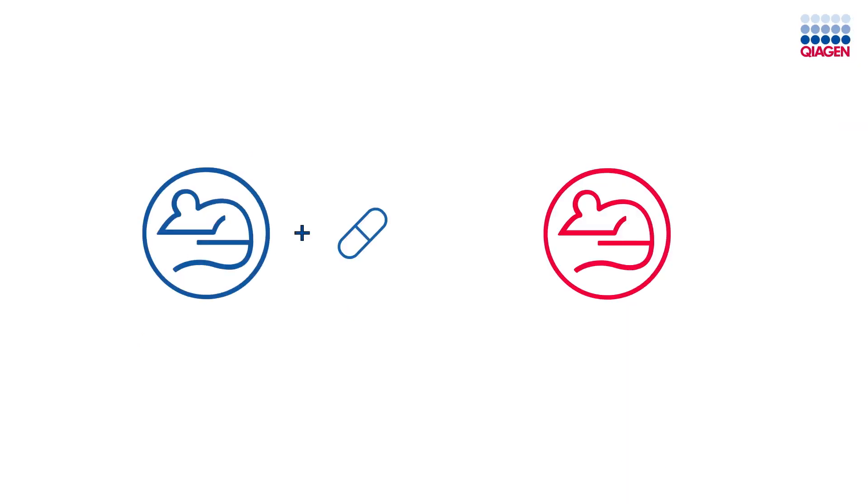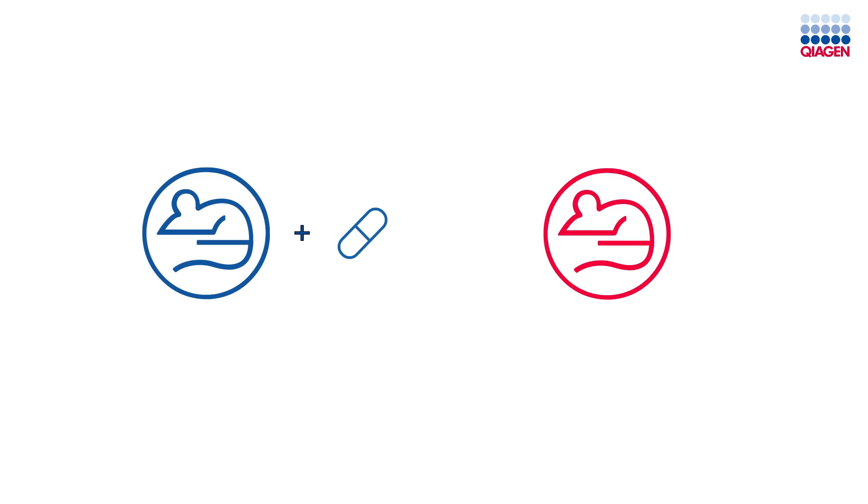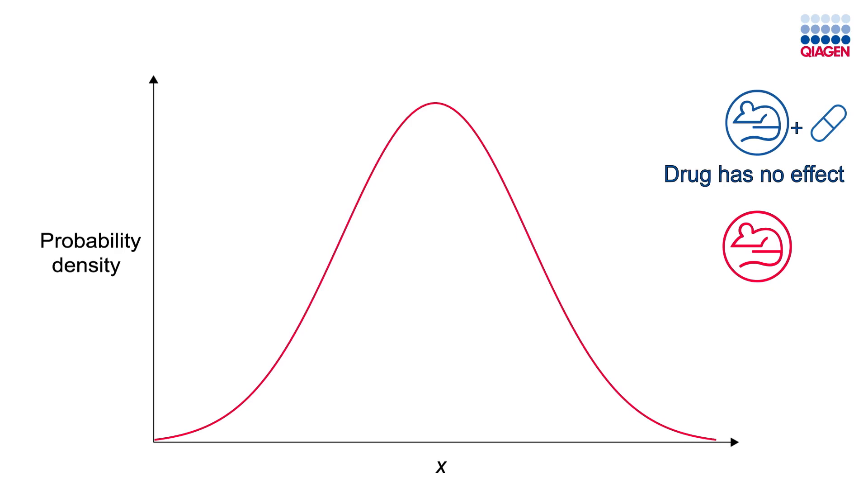Let's go back to our example of the treated and untreated mice to get a better idea of how this method works. Let's say we perform an IPA core analysis, hoping to find which pathways are significantly enriched in the treated mice compared to the untreated mice. However, the drug does not have an effect on the mice. And here's an example of what we see in this situation, where the null hypothesis is true.